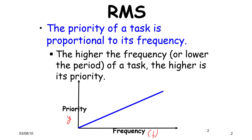The priority of a task, regardless of when it is actually scheduled, remains the same. That is why this is known as a static priority algorithm, as opposed to algorithms such as EDF, where the same task's priority changes over time.